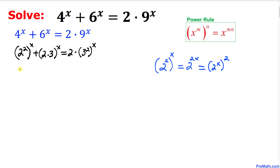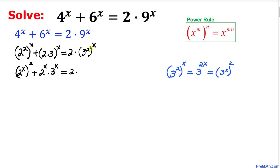So I can replace the first term with (2^x)^2. The middle term 6^x can be broken down as 2^x times 3^x. And applying the same power rule to 3^2 raised to the power x, I can write it as (3^x)^2.